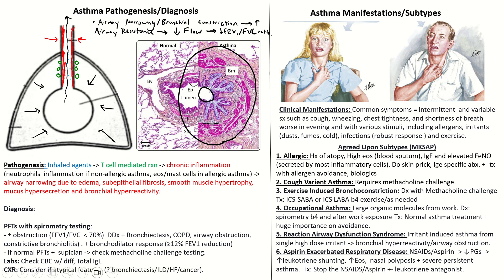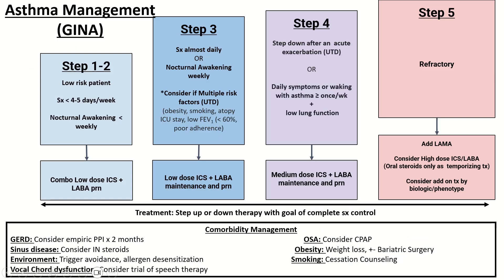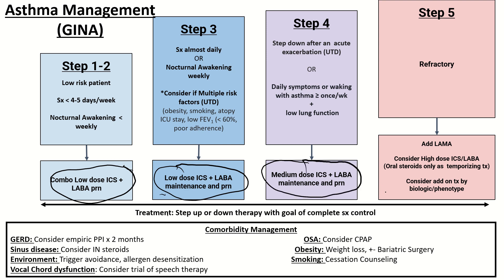Remember, with asthma some patients have chronic remodeling — mucous hypersecretion, smooth muscle hypertrophy, and airway narrowing — but not all patients have that. Some predominantly have reversible bronchoconstriction. For those patients with normal PFTs and high suspicion, diagnose with methacholine challenge. For GINA guidelines: the pathogenesis cornerstone is airway inflammation, so ICS/LABA together is the backbone — use it PRN for patients who are somewhat well controlled.